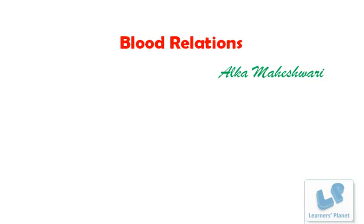In English, blood relationships are very limited. If we talk about people from your father's side or your mother's side, most of the time we use the same name. Your father's father and your mother's father — both are called grandfather. Maternal and paternal are used sometimes, but most frequently we use grandfather. Similarly, your mother's brother or sister and your father's brother or sister — all are called uncle and aunt. There is no mama, chacha, or bua in English — everybody is uncle and aunt if they are one generation above you.